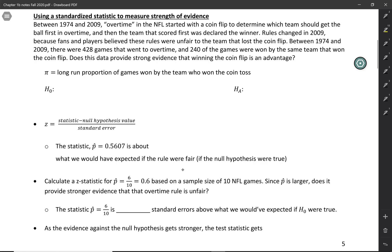We're going to look at this in an example about NFL overtime rules. Between 1974 and 2009, overtime in the NFL started with a coin flip to decide which team would get the ball first in overtime, and then the team that scored first was declared the winner.